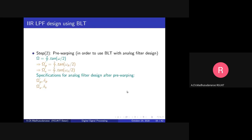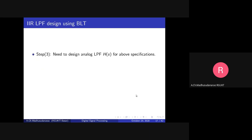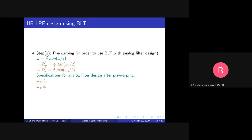Our target is to design the analog low pass filter with these pre-warped specifications. Once we design this, we get back to our digital filter by simply applying bilinear transformation — replacing s with the corresponding expression in z. This analog low pass filter can be designed using various techniques, for example Butterworth filter design, Chebyshev filter design, elliptic filter design, and so on.